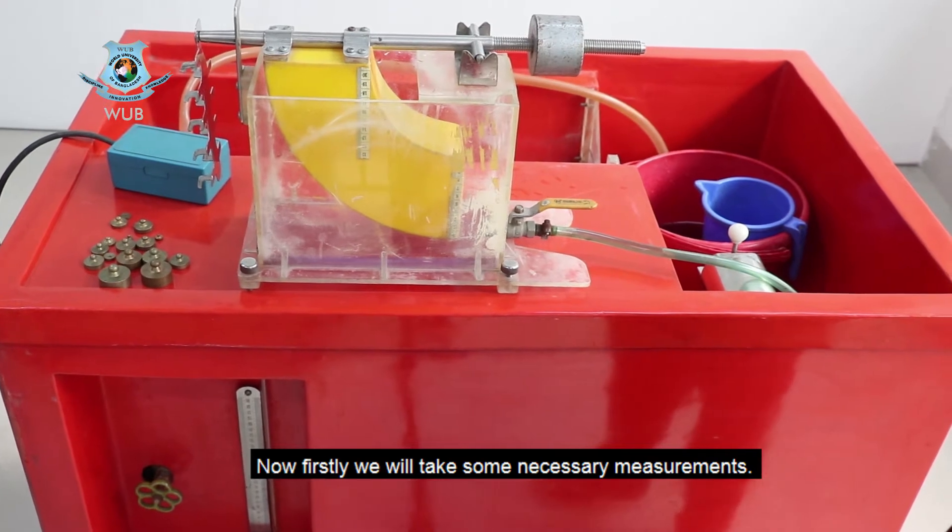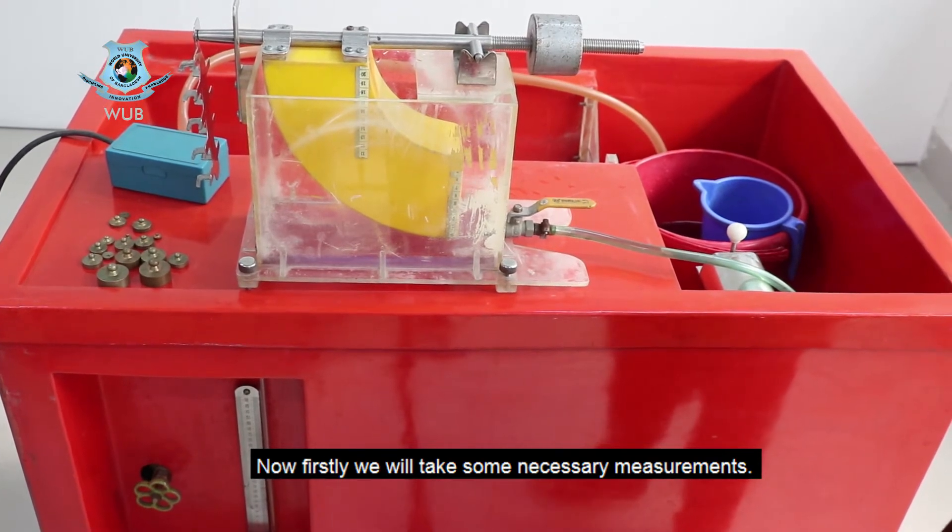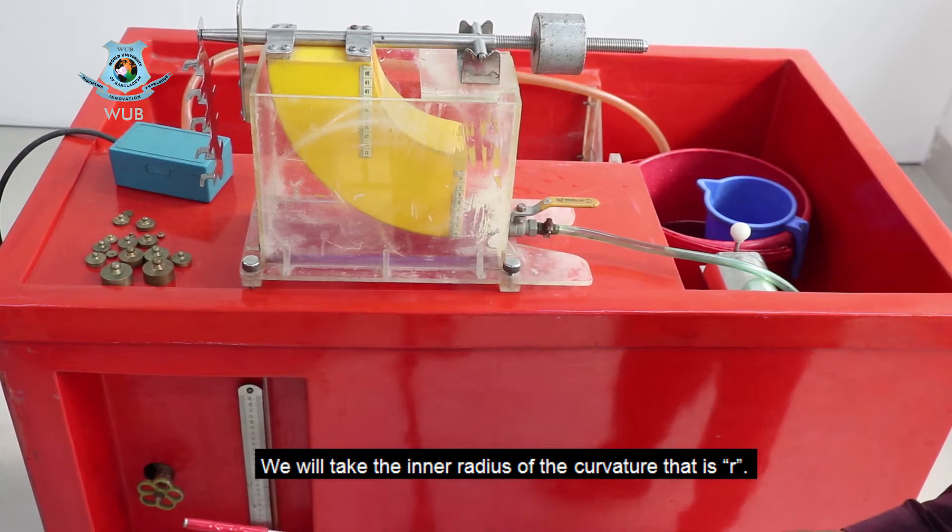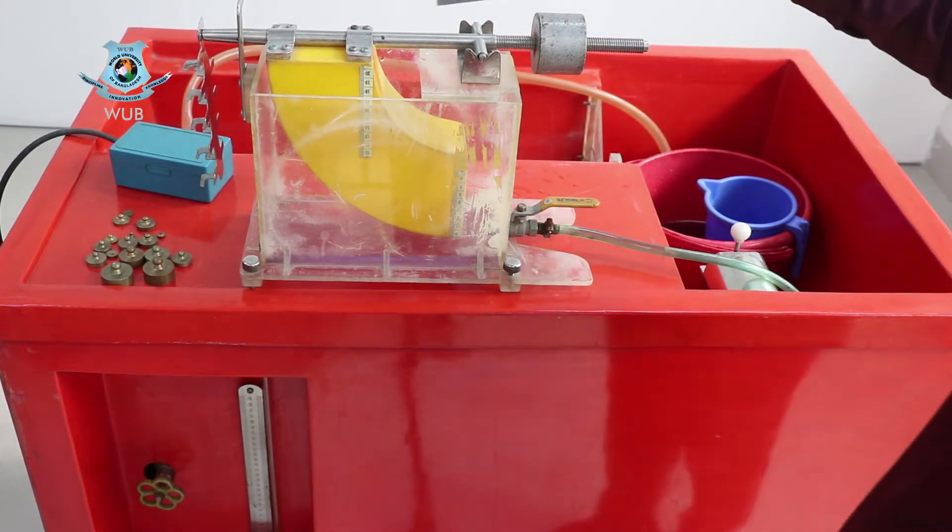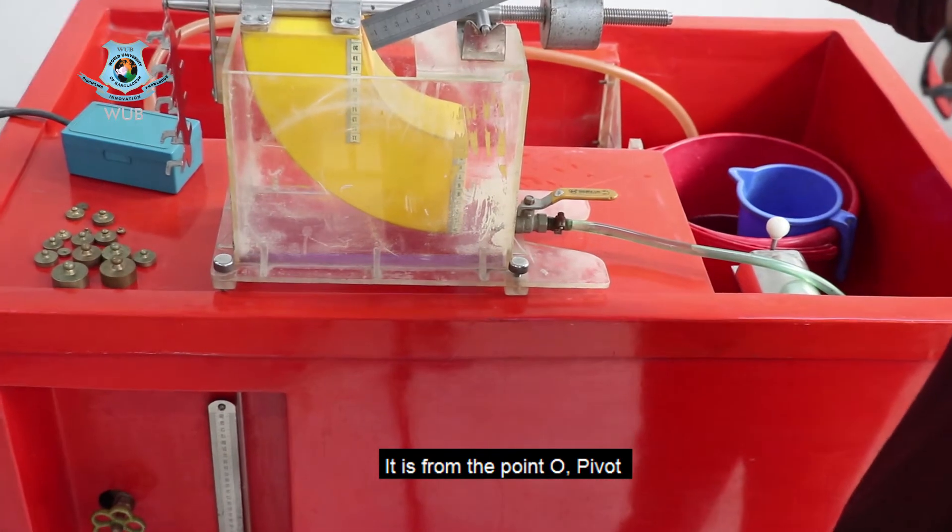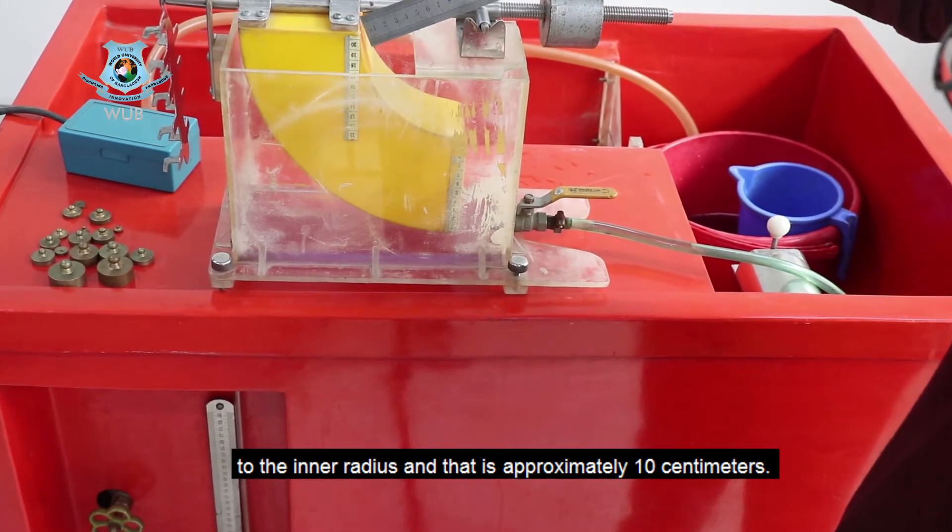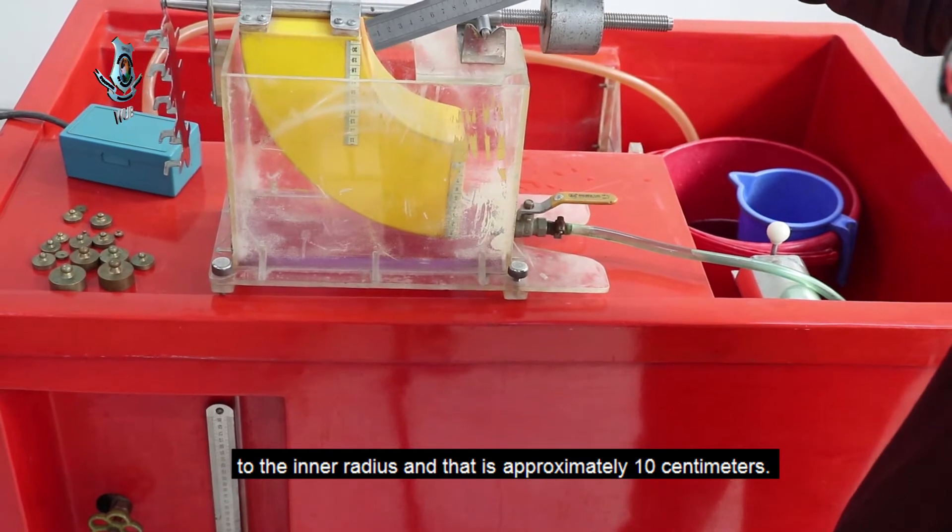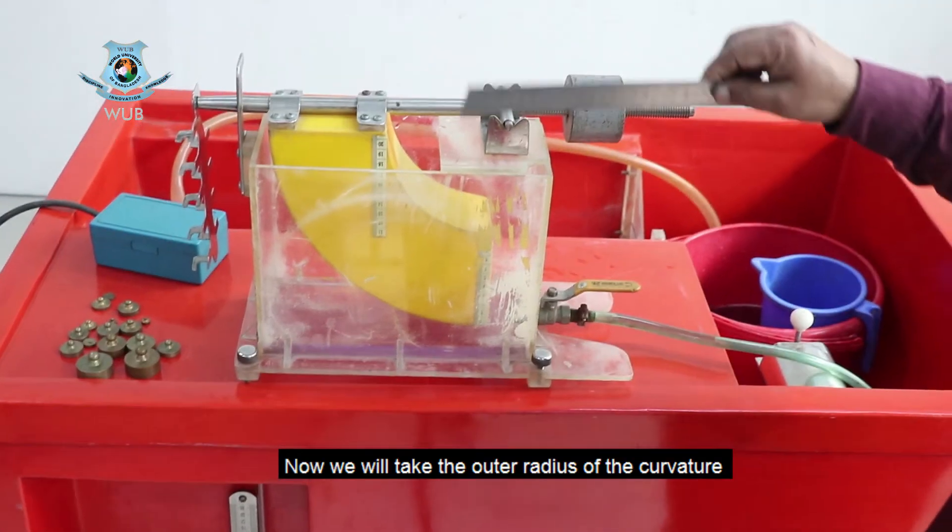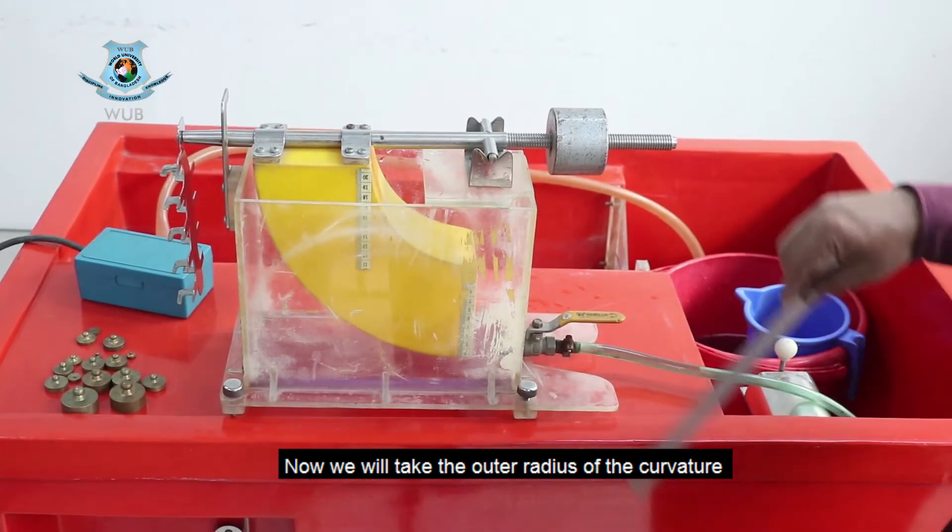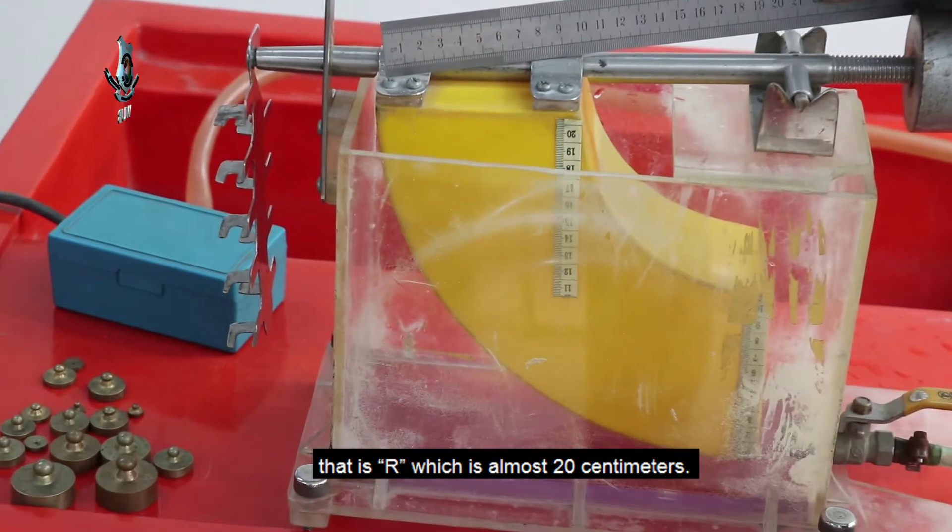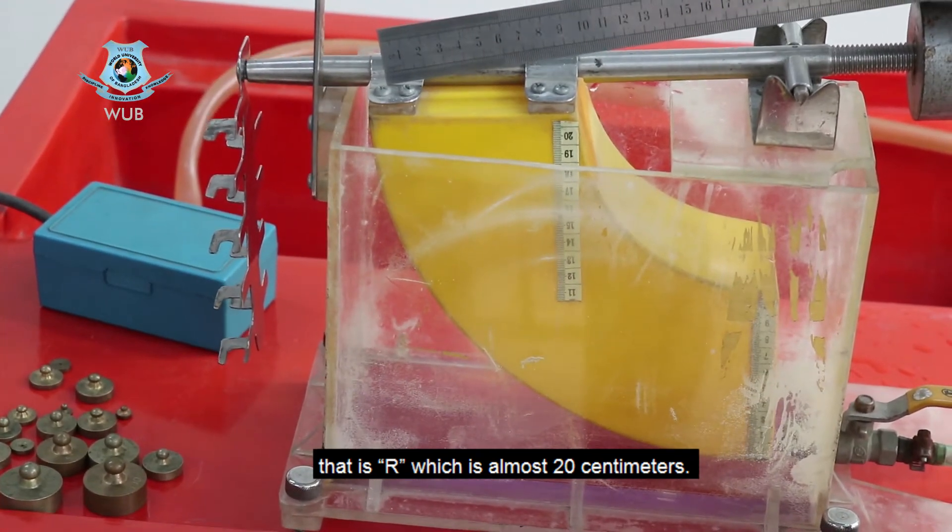Now we will take some necessary measurements. We will take the inner radius of the curvature, that is small r. It is from the point O pivot to the inner radius and that is approximately 10 cm. Now we will take the outer radius of the curvature that is capital R which is almost 20 cm.